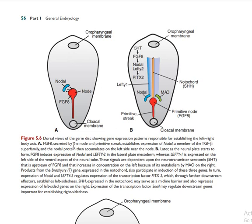We are going to continue with the laterality of the embryo. The embryo has different laterality at the oropharyngeal membrane and the cloacal membrane. We need to know that the primitive knot and the primitive streak produce certain substances — FGF8 is secreted by the knot and the primitive streak.